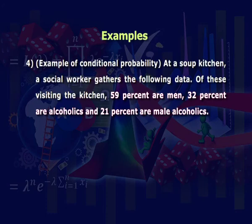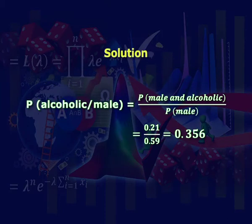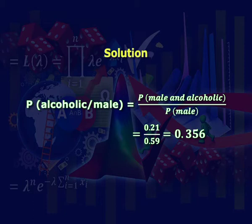Example 4 is on conditional probability. At a soup kitchen, a social worker gathers the following data: 59% of visitors are men, 32% are alcoholics, and 21% are male alcoholics. What is the probability that a random male visitor to the kitchen is an alcoholic? Solution: P(alcoholic | male) = P(male and alcoholic) / P(male) = 0.21 / 0.59 = 0.356.